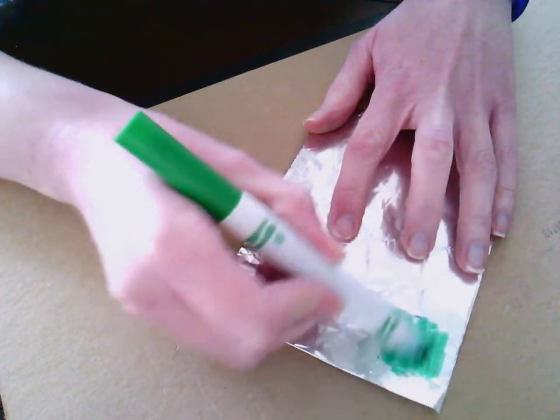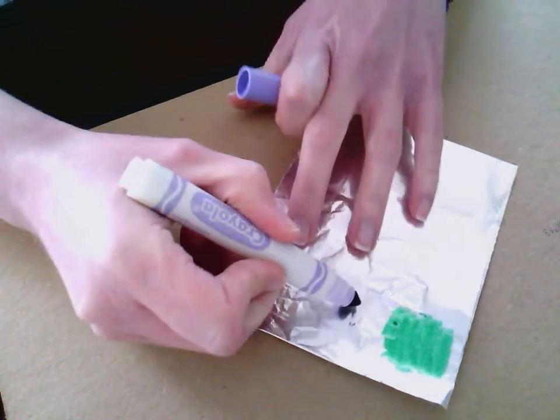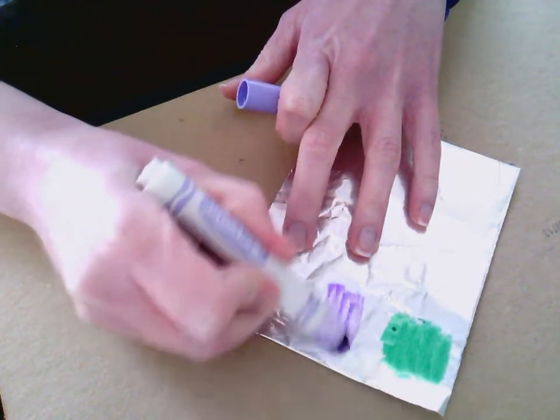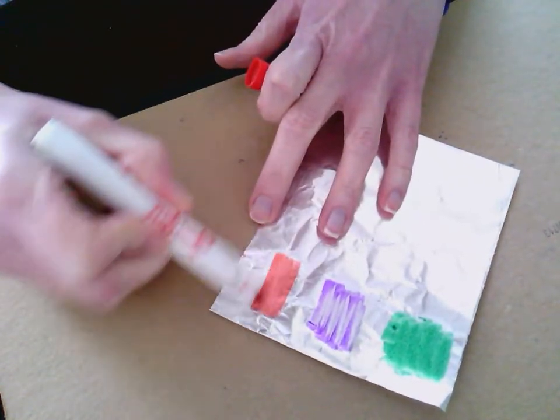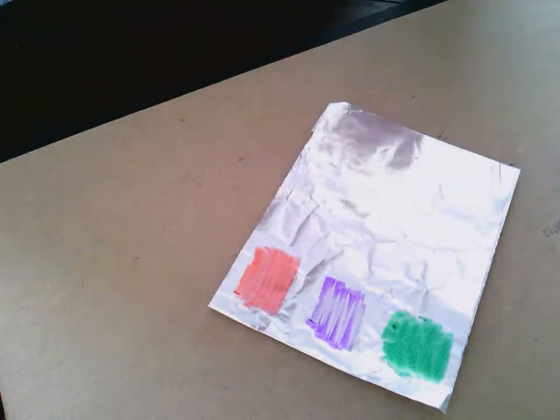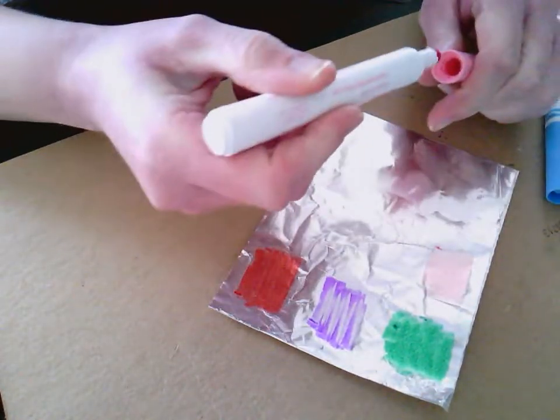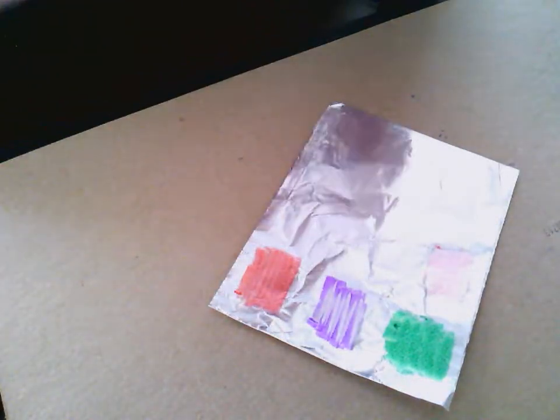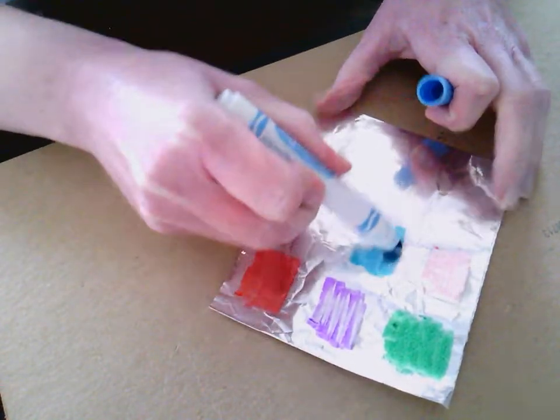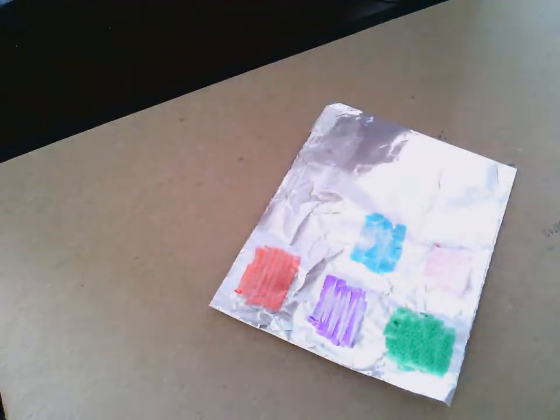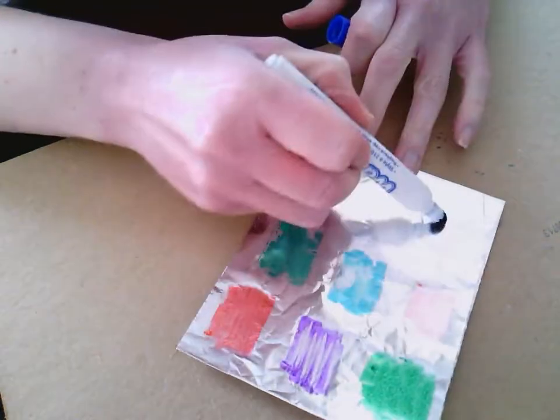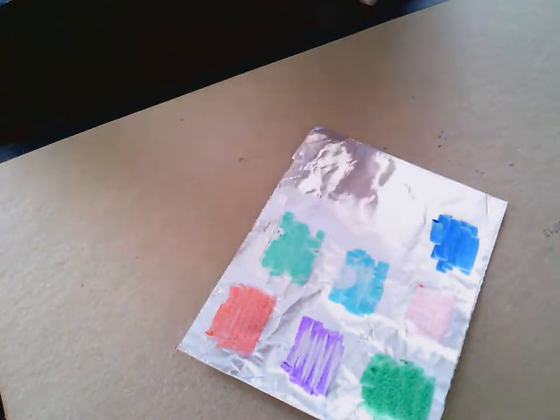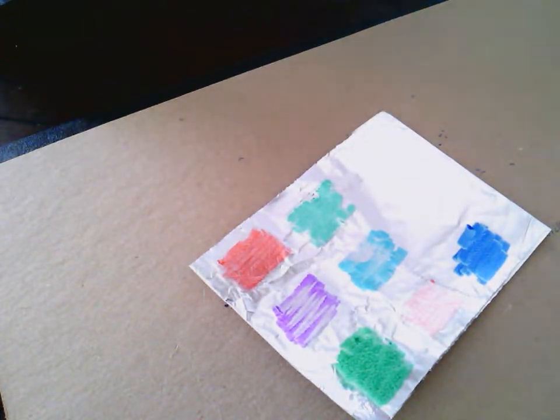So what I'm going to do with this tin foil and my markers is that essentially I'm going to make myself my painting palette. I'm going to color the marker onto my piece of tin foil. I'm just going to color in some squares, making my color palette.